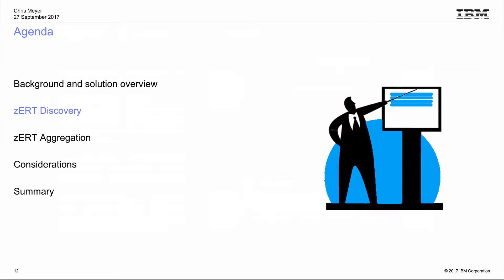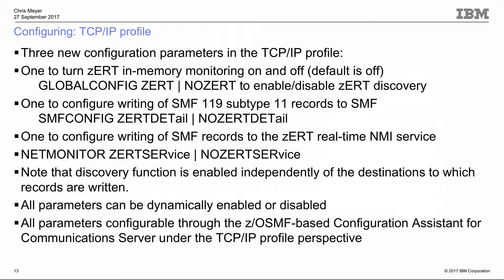To configure zERT and turn on discovery, there are three new parameters in the TCP/IP profile. One is on the GLOBALCONFIG statement — ZERT or NOZERT, with NOZERT as the default. Specifying GLOBALCONFIG ZERT turns on the discovery function in the stack, telling it to start observing traffic and recording information in memory. It does not force writing of information to any particular destination — that's controlled through separate parameters.